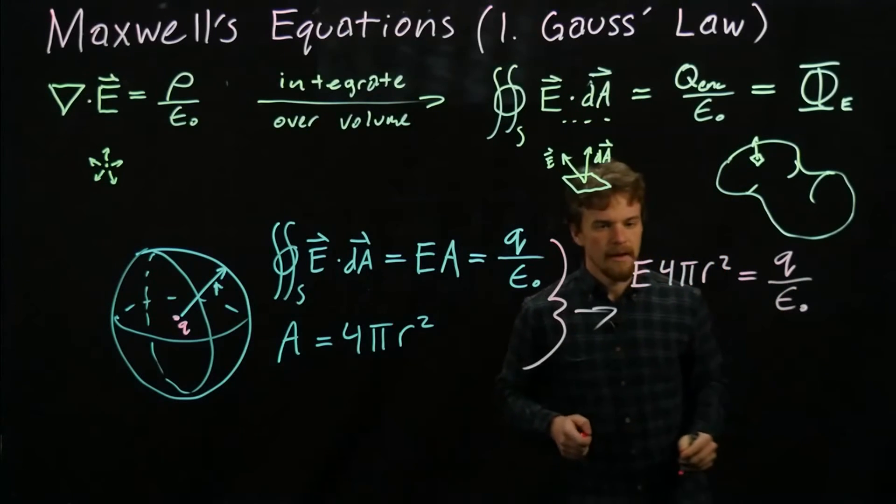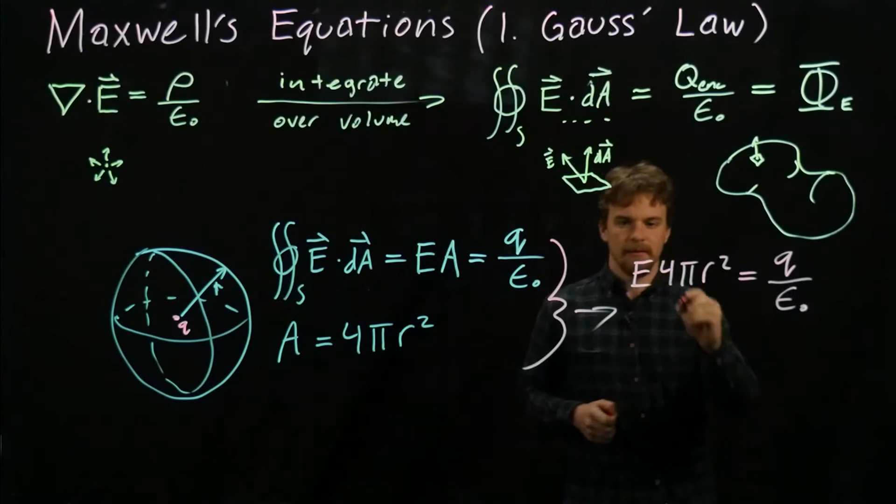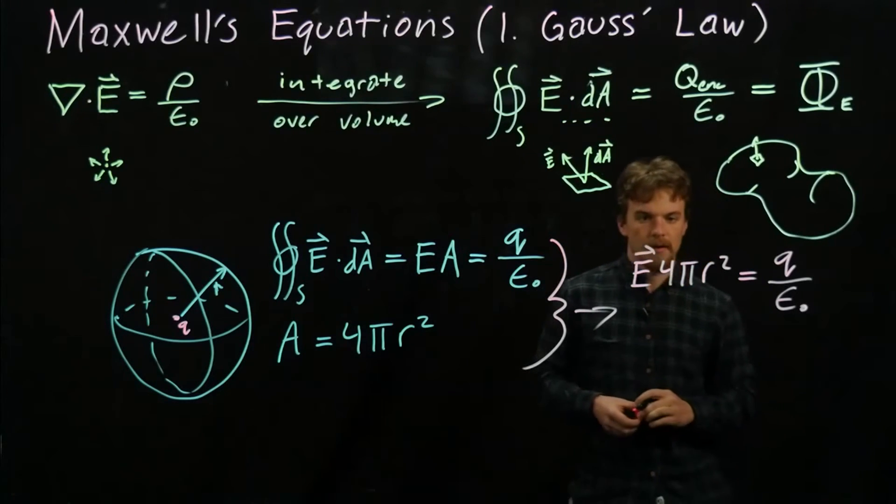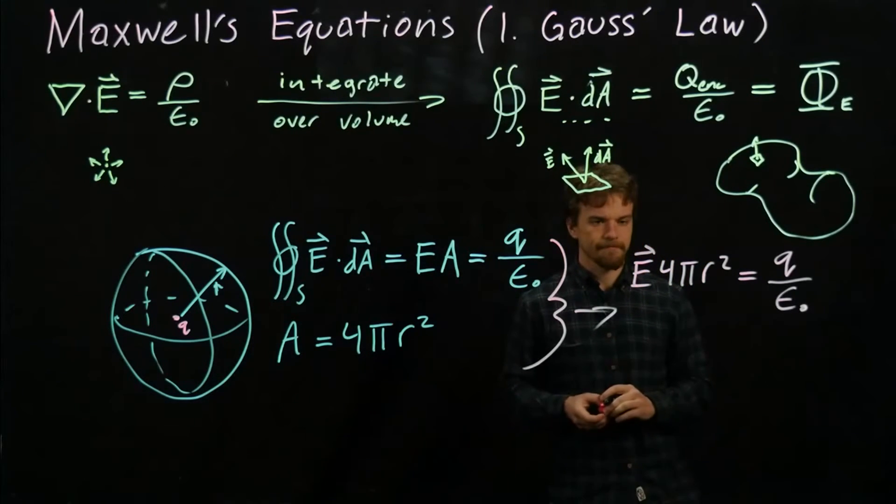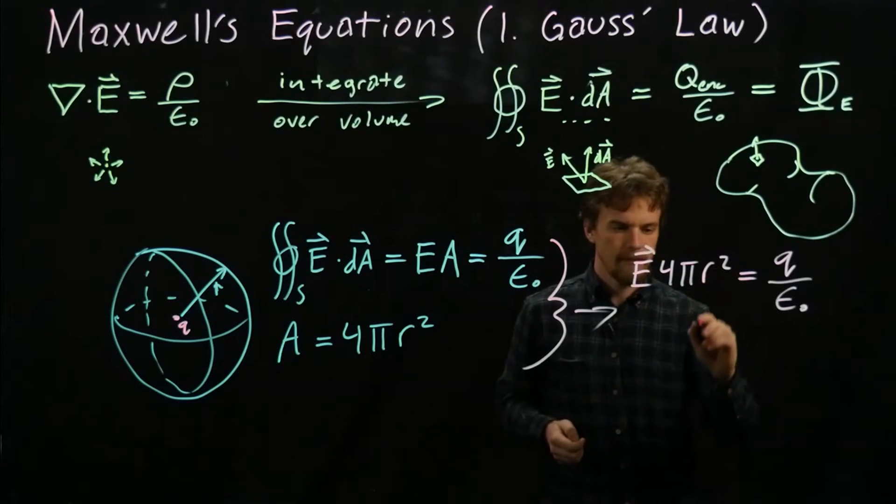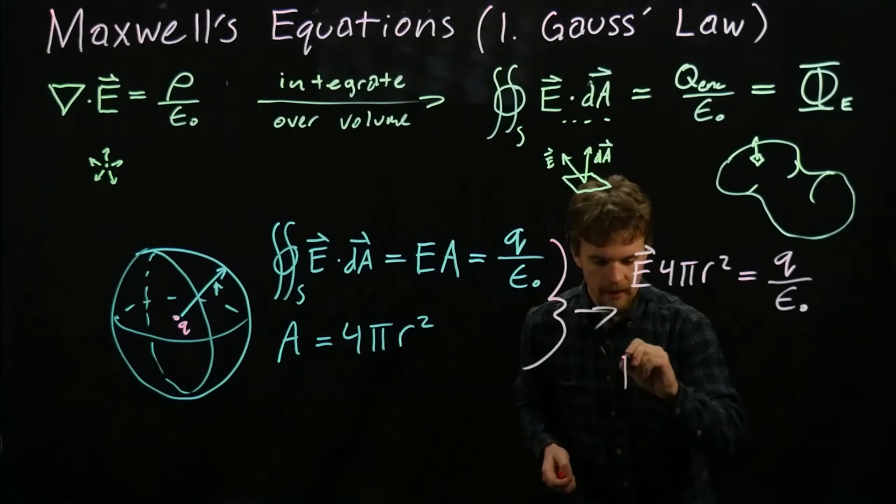We get that E times 4πr² is equal to our point charge q over ε₀. This is still a vector, so let's divide by 4πr².